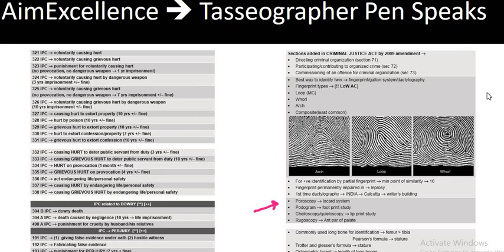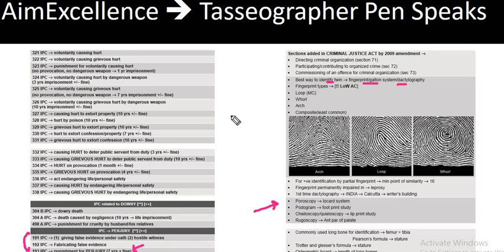On this particular side you can see the IPC section is mentioned. A clear description has been given, so by reading these three lines you can actually answer one question. It is clearly written that the best way to identify twins is by fingerprint, the Galton system, or by dactylography — which would easily help you answer one question correctly.